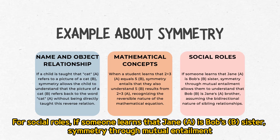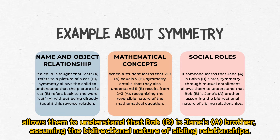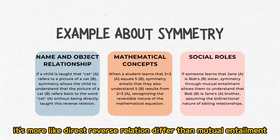For social roles, if someone learns that Jane is Bob's sister, symmetry through mutual entailment allows them to understand that Bob is Jane's brother, assuming the bidirectional nature of sibling relationships. This is more like a direct-reverse relation rather than broader mutual entailment.